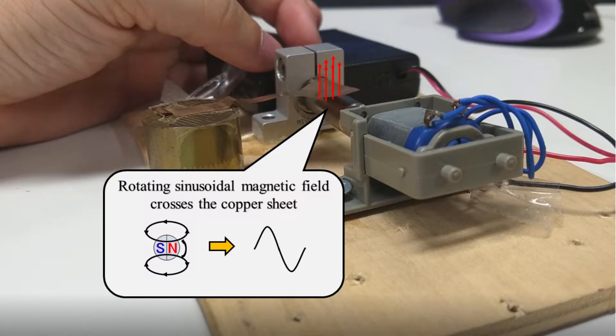First, let's take a look at our permanent magnet. When this permanent magnet is rotated, a sinusoidal magnetic field is generated, and this field crosses the copper sheet.